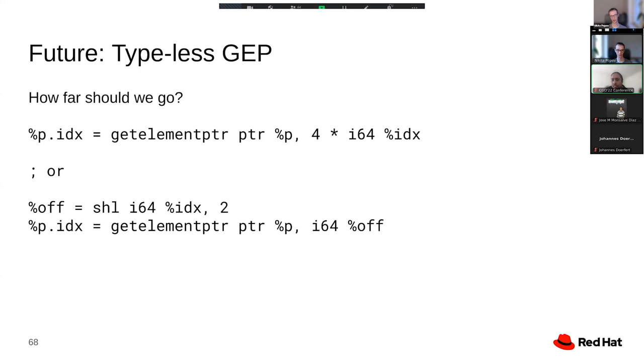In particular, currently, the get element pointer instruction effectively allows you to do scaled multiply operations where you have, for example, multiply an index by 4 if you are indexing into an i32 array. And ideally, we could retain support for that and allow get element pointer instructions to encode that. Or we could say that get element pointer only accepts base pointer and offset and nothing else, in which case the offset calculation would have to be implemented in plain IR. Both of those have advantages and disadvantages. The advantage of the second form is that it's more canonical, so there are fewer different ways to encode the same thing.